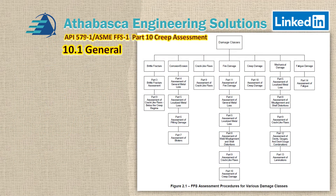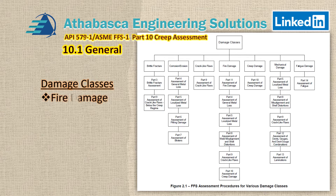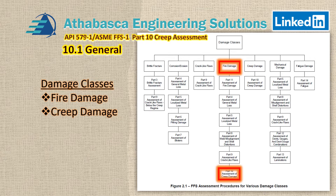Now we're going to go back to Part 2. Recall that Part 2 is the roadmap per API 579, and we're going to review that briefly to see where we are. Where would we apply CREEP assessment? There are two locations: for fire damage and for CREEP damage. Those are the damage classes. And if you look down on that list at the bottom, it's shown as one of the many failure mechanisms that can occur as a result of fire damage, as well as straight CREEP damage from use in high-temperature environments.